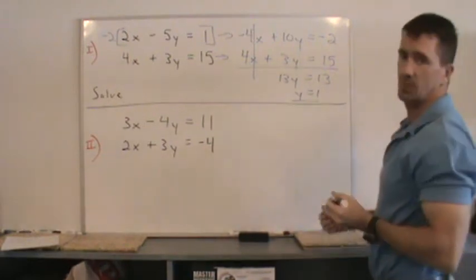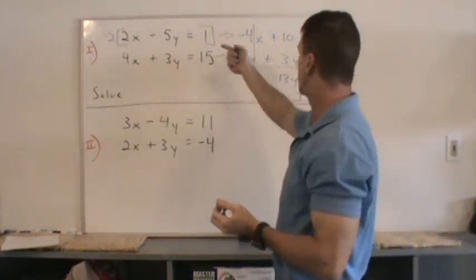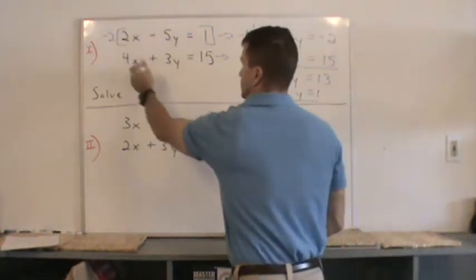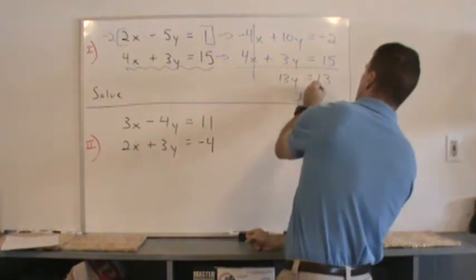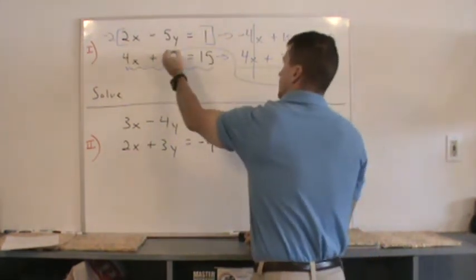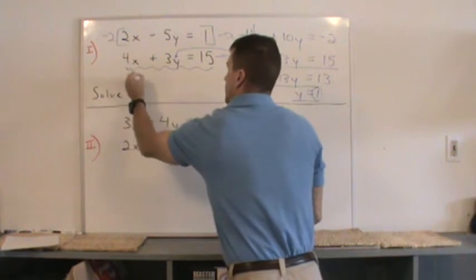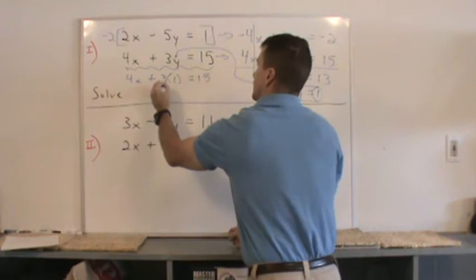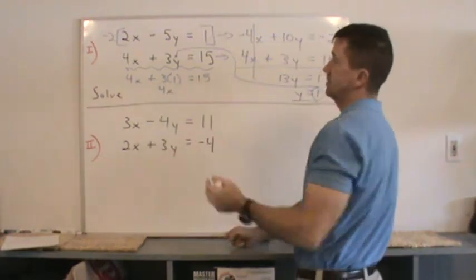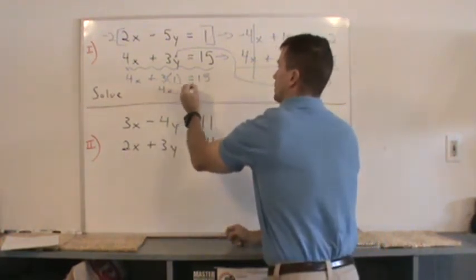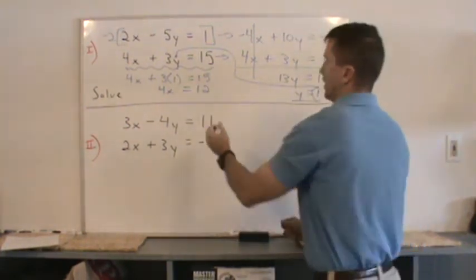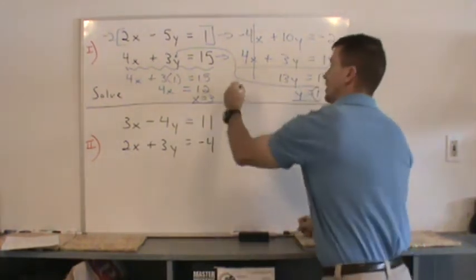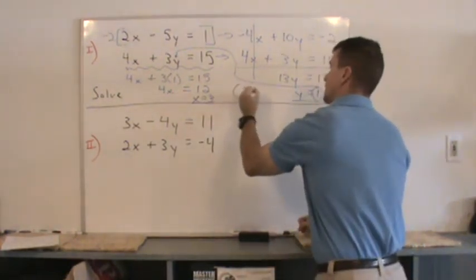We got y. Now, how do we get x? You can actually use any equation up here to substitute y back in to solve for x. I'm going to take this one and put it right back in there. We got 4x plus 3 times 1 equals 15. Subtract the 3 on both sides because 3 times 1 is 3. 15 minus 3 is 12. 4x equals 12. x equals 3. So x equals 3, y equals 1. And we can write this as an xy coordinate: 3 comma 1.